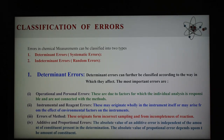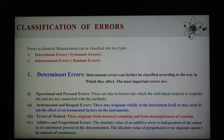In the classification of errors, errors can be classified into two types: determinate or systematic error, and indeterminate error or random error. Determinate errors can be further classified according to the way they affect the result, depending upon the system, the measured object value, and the instrument. Systematic errors are of constant character and always occur in one direction, though magnitude may change from one measurement to another.